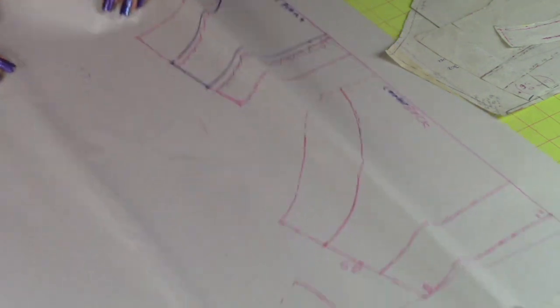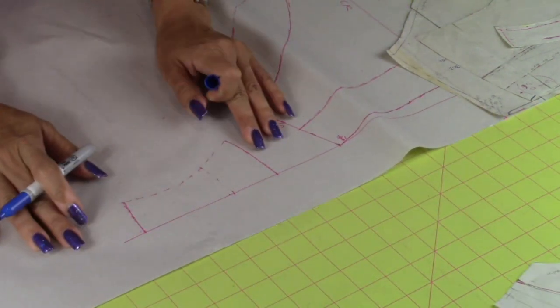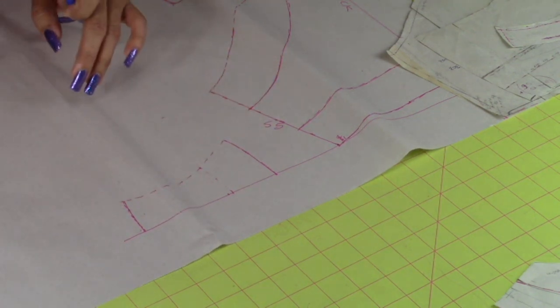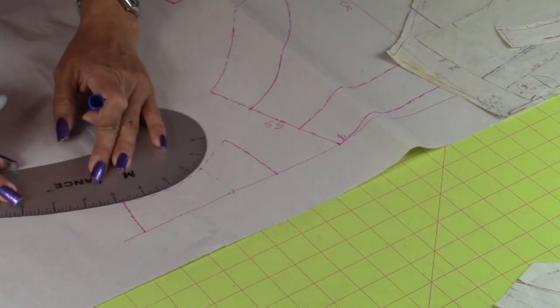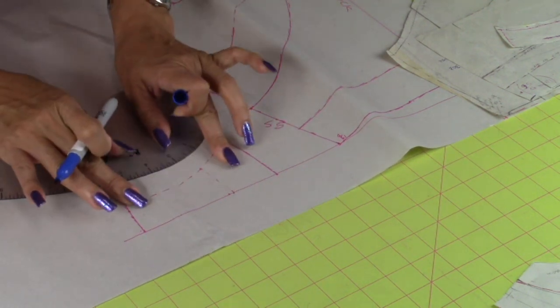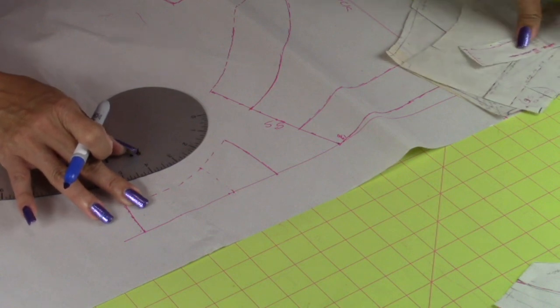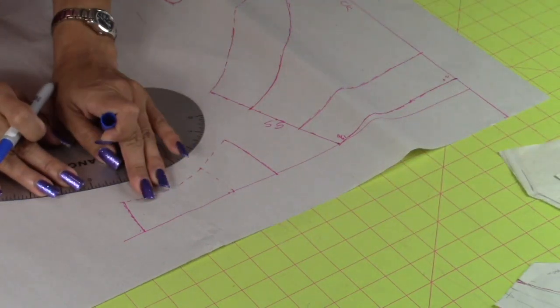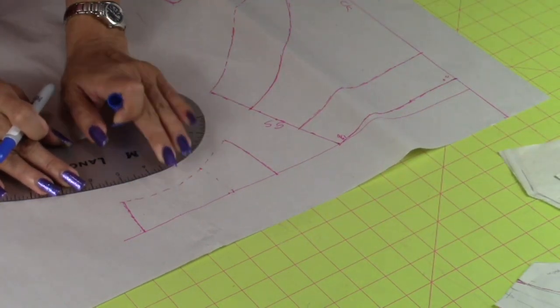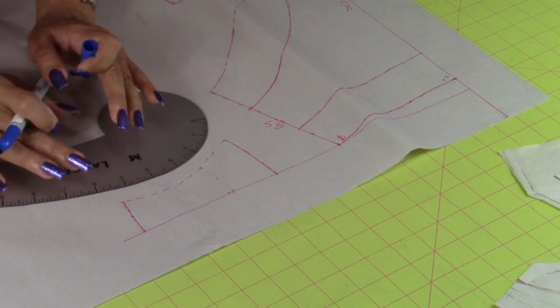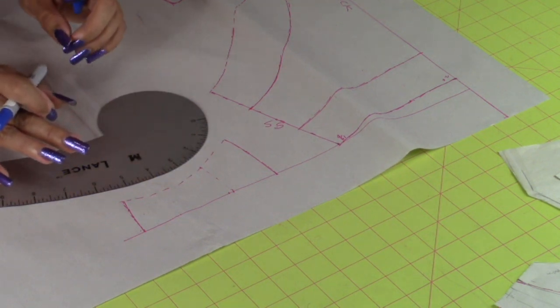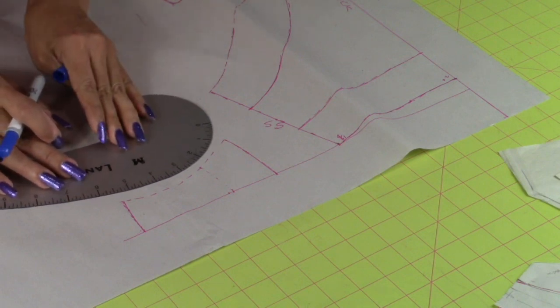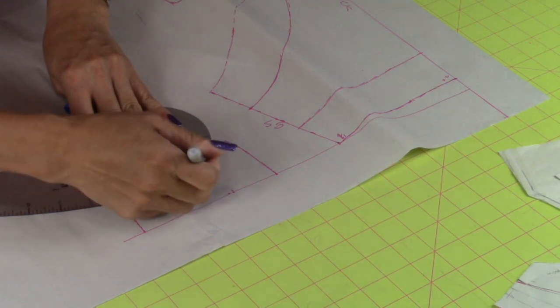Now we are going to work on our lining and crotch. So this is the original size from our brief. But we will have to reduce it because this is not going to be fitting like the brief. This is going to be more tighter, snug. So we are going to work on this one.